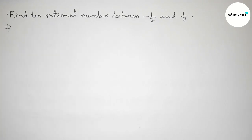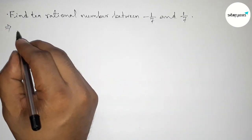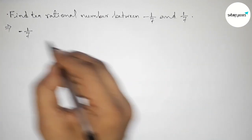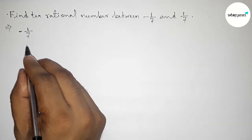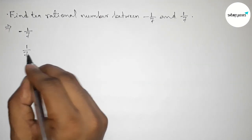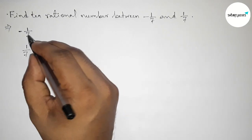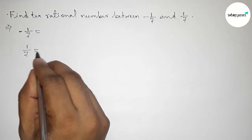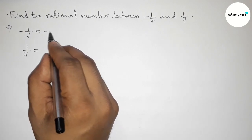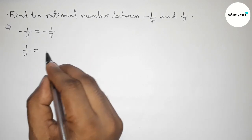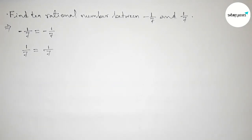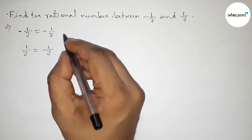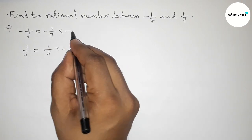Let's start the video. First of all, let's solve this problem. Here given: minus 1 by 7 and 1 by 7. Here both the denominators are same. Now doing some important calculation — for 10 rational numbers we have to multiply both numbers.